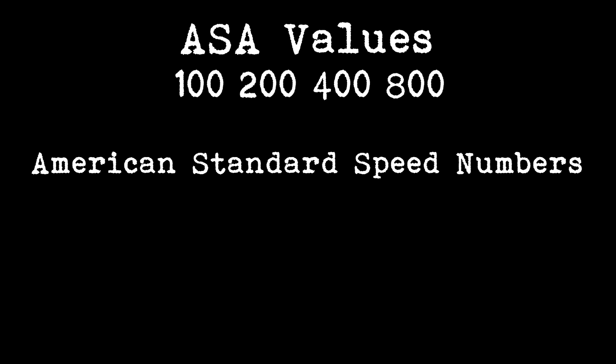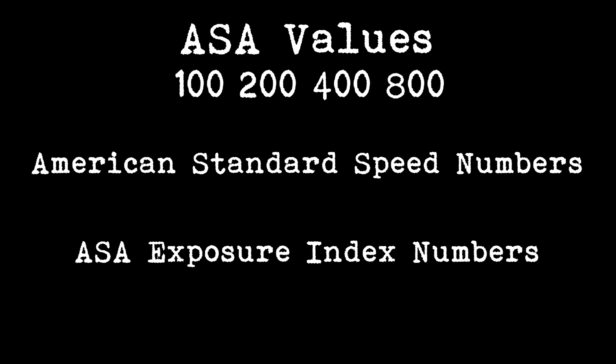In the United States of America, film used to have an ASA number on it. This stood for the American Standards Association. In the early 1940s, the ASA set a standard for film speed for negative black and white film. Originally, ASA values were referred to as American Standard Speed Numbers or ASA Exposure Index Numbers.